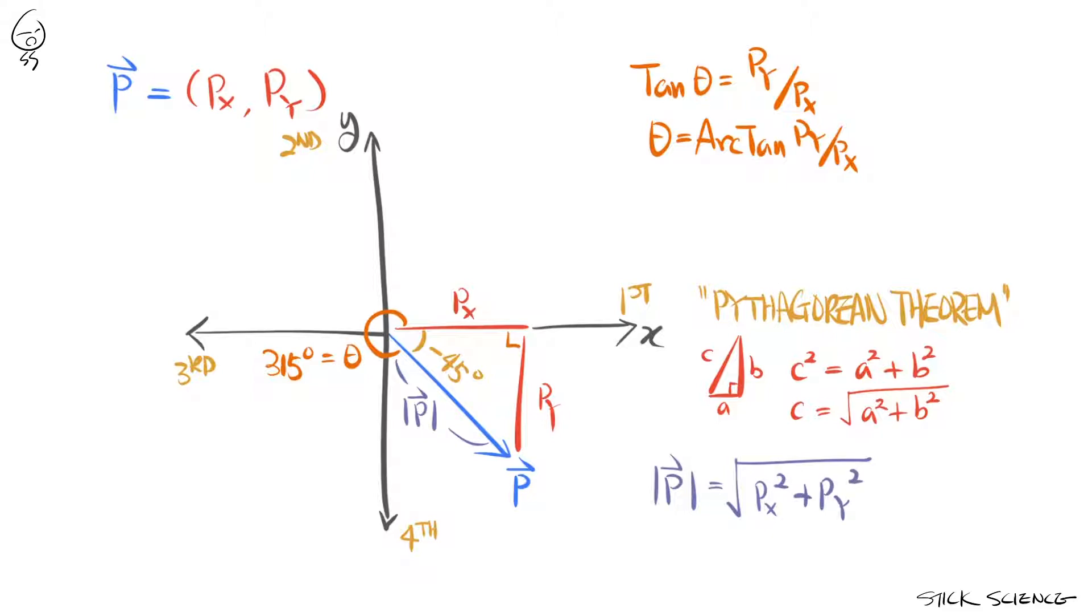Also if you know the direction and magnitude of a vector, you can find out what its components are using the relationship cosine theta is equal to px over p and sine theta is equal to py over p. Rewrite and you get px is equal to p cosine theta and py is equal to p sine theta.